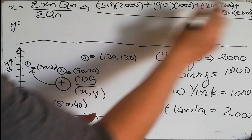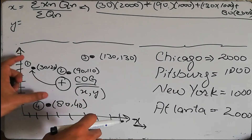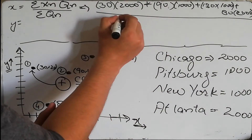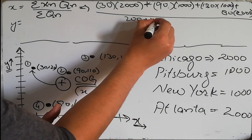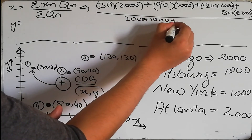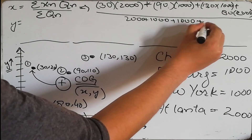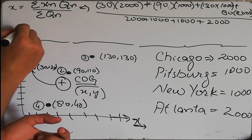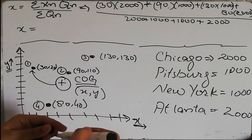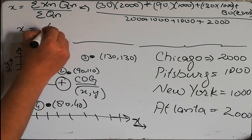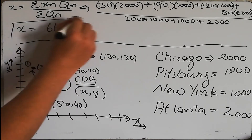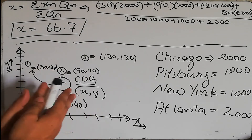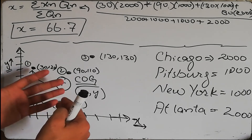The denominator is the summation of all quantities: 2000 + 1000 + 1000 + 2000 = 6000. After solving, the x coordinate of the center of gravity comes out to 66.7. This is the x coordinate where it would be most beneficial to install our industrial facility in order to achieve minimum distribution cost.